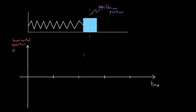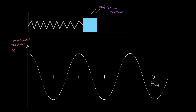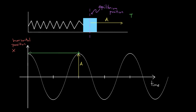We saw that you could represent the motion of a simple harmonic oscillator on a horizontal position graph. The amplitude of that motion — the maximum displacement from equilibrium — was represented by the maximum displacement from equilibrium on the graph. The period, capital T, which was the time it takes for the entire process to reset, was from peak to peak, or trough to trough, or from any point to any analogous point on the cycle.